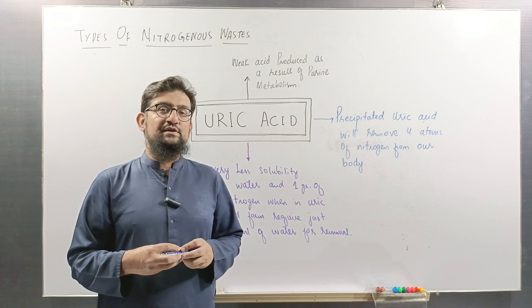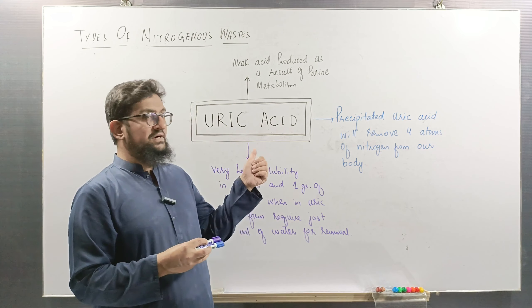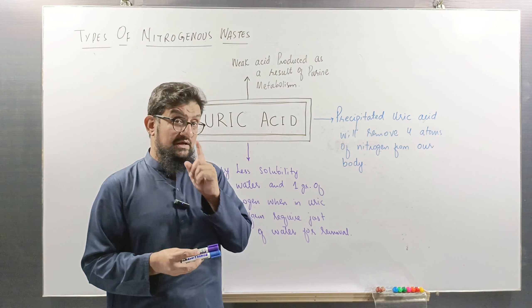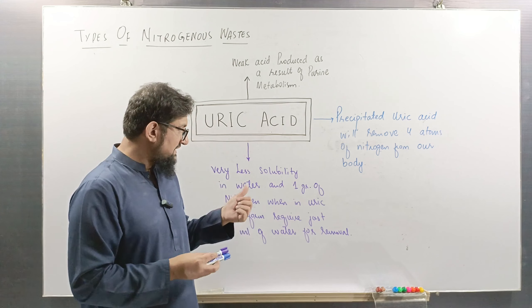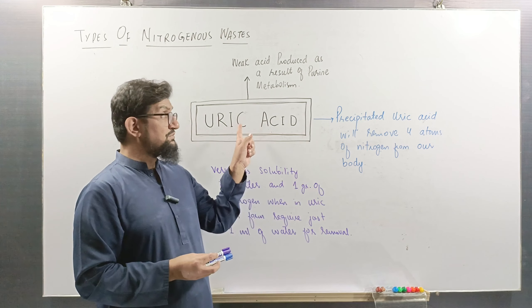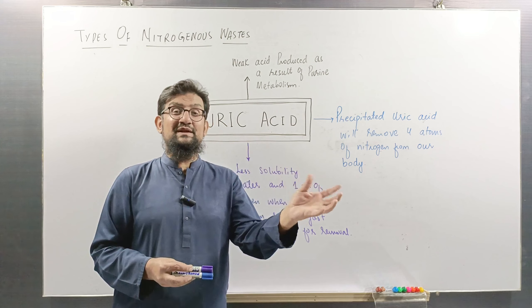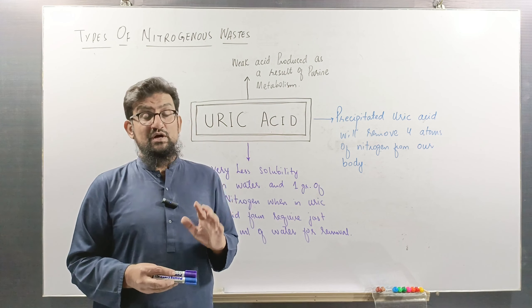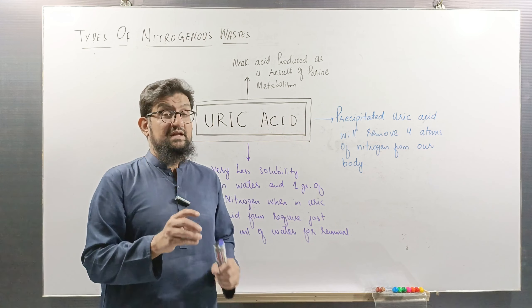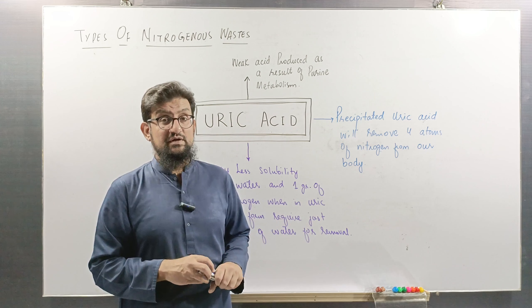Uric acid is almost insoluble in water. That is the reason why one gram of nitrogen in the form of uric acid requires only one milliliter of water to be removed from the body. This is very, very less in comparison with urea and ammonia.